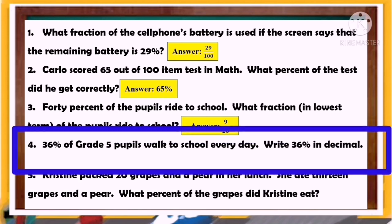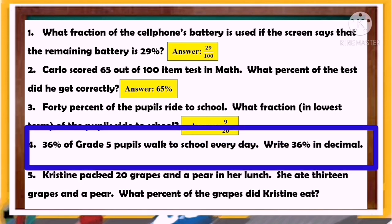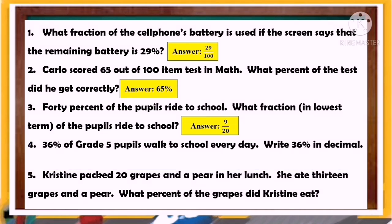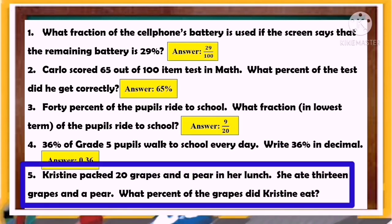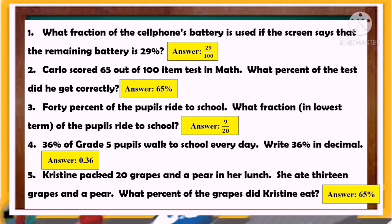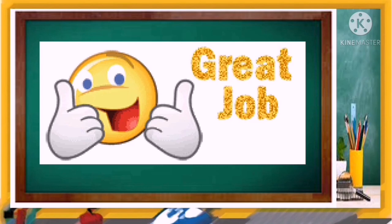Number 4: 36% of Grade 5 pupils walk to school every day. Write 36% in decimal. The answer is thirty-six hundredths, or 0.36. Number 5: Christine packed 20 grapes and a pear in her lunch. She ate 13 grapes and a pear. What percent of the grapes did Christine eat? The answer is 65 percent. Great job, kids!